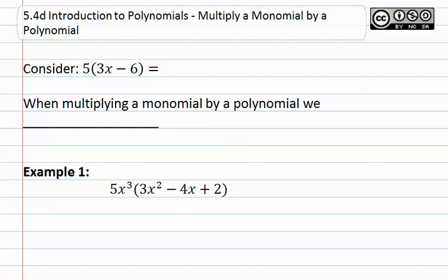Consider what we have done previously when we had a number out front of a binomial. We had to distribute this number through by multiplying it to each piece within, giving us 15x minus 30. We will use this same process when multiplying a monomial by a polynomial and we will distribute.